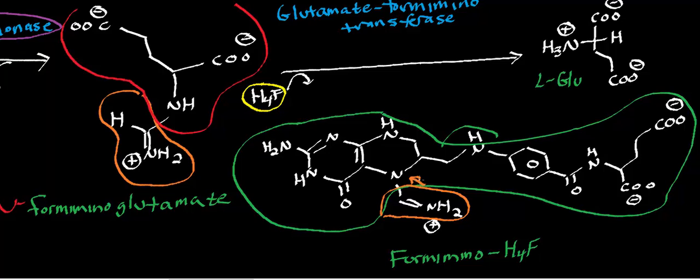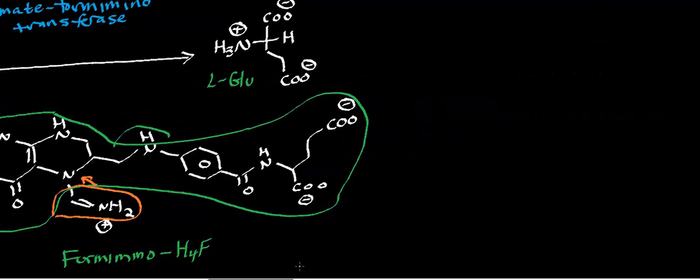What that generates is formaminotetrahydrofolate, and that gets shunted into tetrahydrofolate metabolism. Specifically, you'll have to look at the tetrahydrofolate biosynthesis reaction scheme video. Of course, we're going to get glutamate in the process. The glutamate that we get is going to get degraded into alpha-ketoglutarate, and it's going to get degraded by glutamate dehydrogenase.